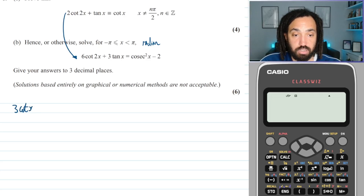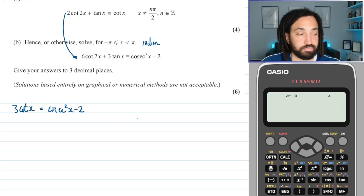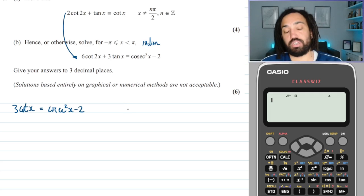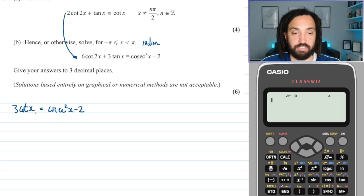So I'm going to write 3 cot x is equal to cosec squared x minus 2. Now you can't really solve a trig equation if you have different trig functions in it so we're going to need to swap one of them out.